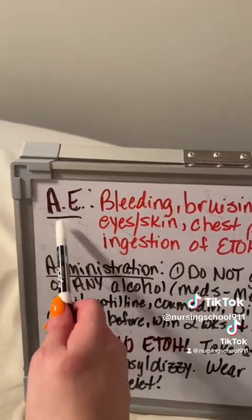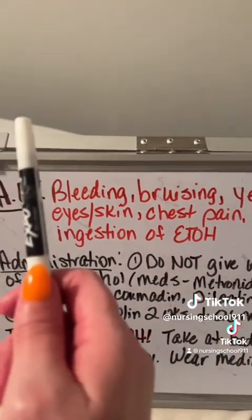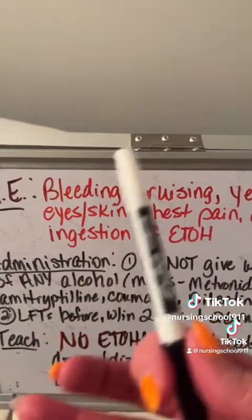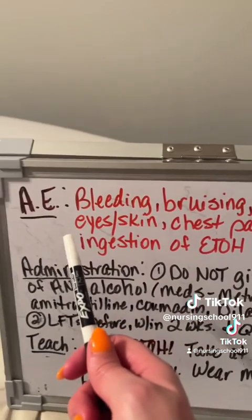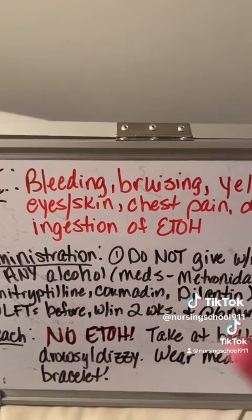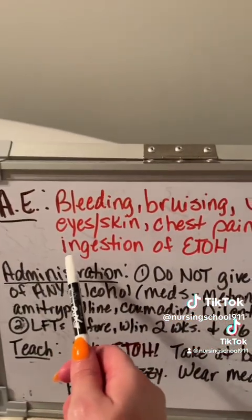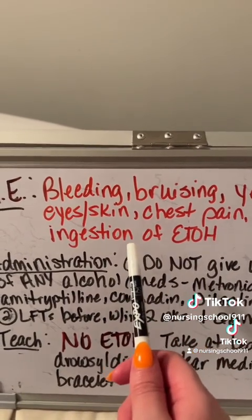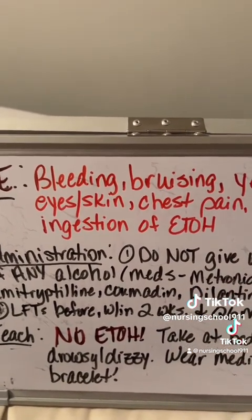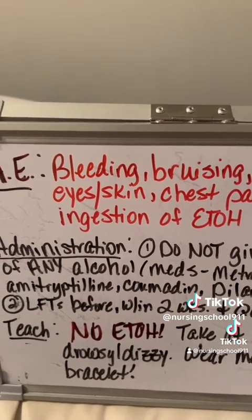Conversely, our adverse effects — which do need to be reported to the provider — include unusual bleeding or bruising, which is a common manifestation of liver malfunction; yellowing of the eyes or skin, which is jaundice and buildup of bilirubin, common to alcohol dependence and cirrhosis; chest pain; dyspnea. Patients also need to let the provider know if they ingest any alcohol at all — not just whiskey, beer, or vodka, but anything containing any alcohol, including some medications.